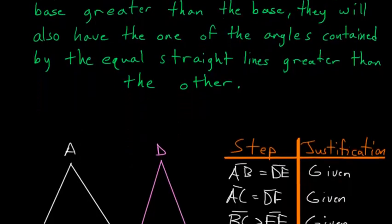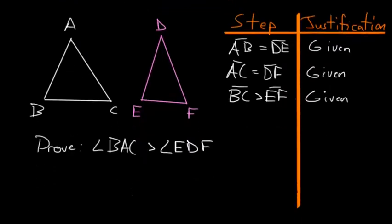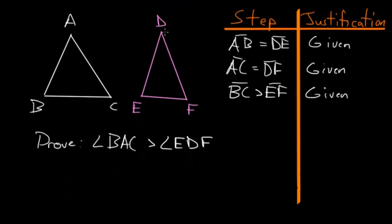So let's say we have two triangles, triangle ABC and DEF, and we know that the side AB and DE are equal, and we also know that AC and DF are equal, and the last thing we know is that this base BC is bigger than the base EF.